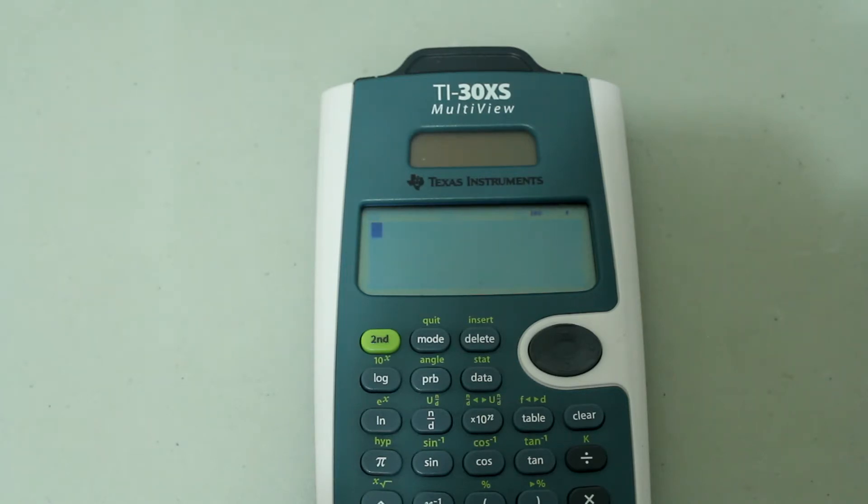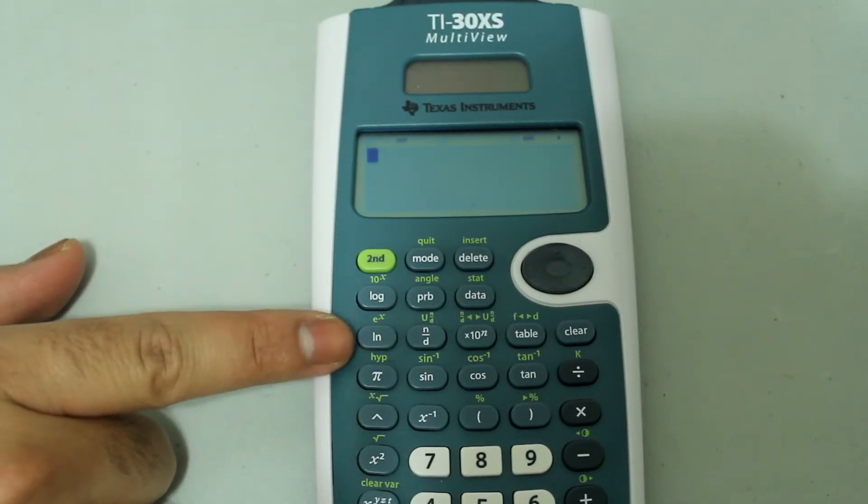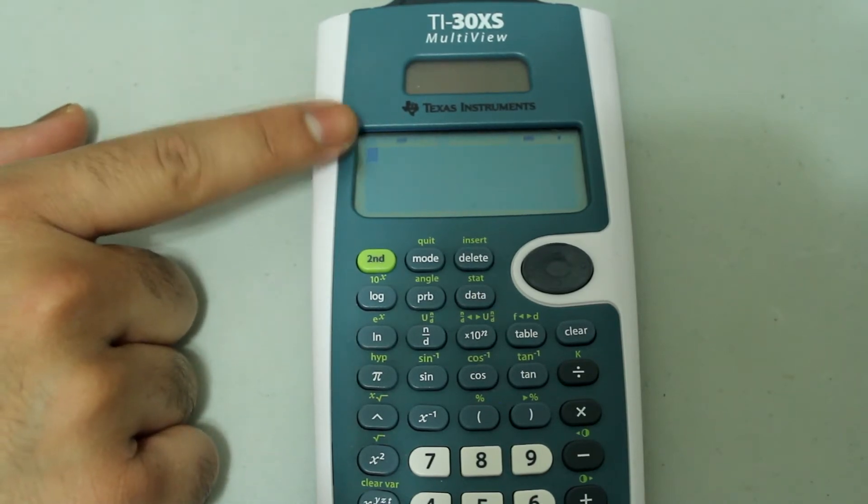First I'm going to find the hyperbolic sine of natural log of 2. Press the second button and then press the PI button to choose HYP, and when you choose the HYP function or option,